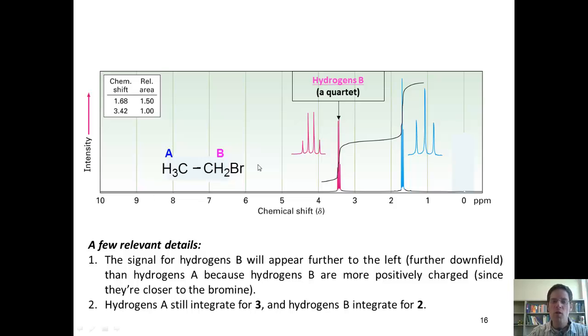4 means a quartet. Hydrogens A are further from this electron withdrawing bromine, so they appear further to the right or further upfield, right here. They are a triplet. Why? Because hydrogens A look next door and see hydrogens B, there are 2 hydrogens B, I add 1 to it. That is a triplet.